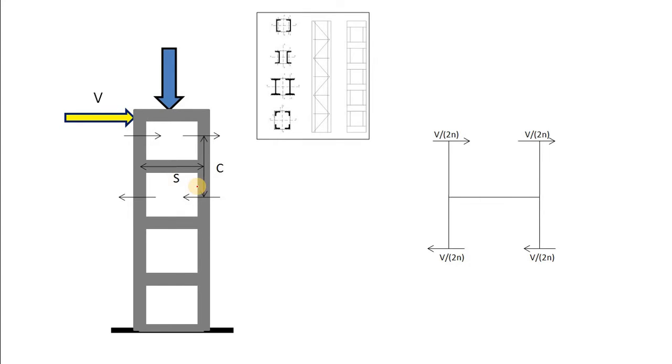Now let's see how the battens are affected by this shear force. Say the spacing of the batten is C, and the effective length of batten is S. Cut out one batten and it looks like this.